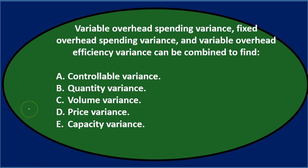Next question: Variable overhead spending variance, fixed overhead spending variance, and variable overhead efficiency variance can be combined to find either A. controllable variance, B. quantity variance, C. volume variance, D. price variance, or E. capacity variance.